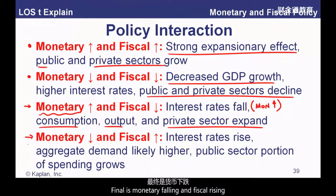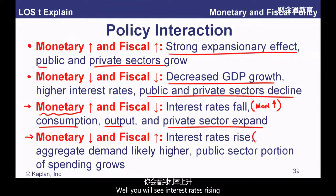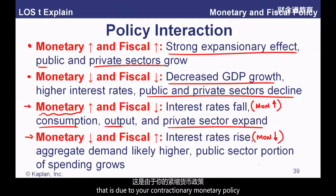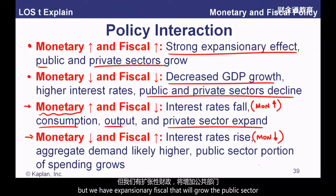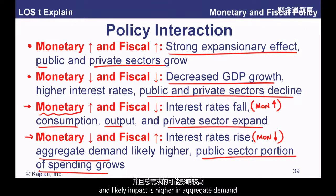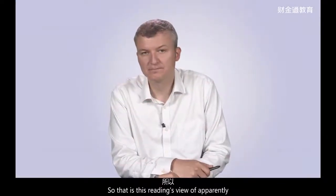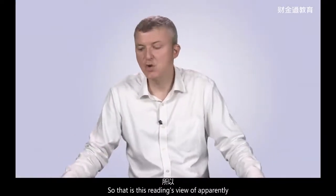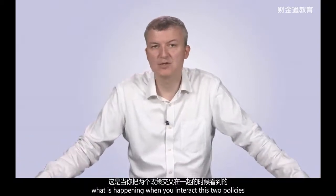The final scenario is contractionary monetary combined with expansionary fiscal policy. You'll see interest rates rising due to the contractionary monetary policy. But expansionary fiscal policy will grow the public sector — government spending increases the public sector portion. The likely overall impact is higher aggregate demand. That's what tends to happen empirically when you interact these two policies.